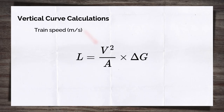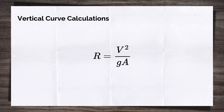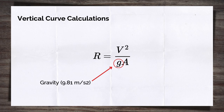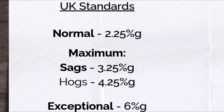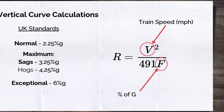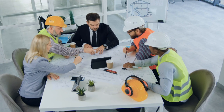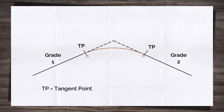Curve length can be determined using the train speed V, an acceptable rate of acceleration A (which you'll normally find in your standards), and the change between the gradients in decimal form, G. When it comes to radius, the minimum curve radius is found with: R = V² / (g × A), with little g being gravity at 9.81 metres per second squared. The curve length and radius are linked through: radius = length divided by the change in big G. In the UK, the standards set limits on the acceptable value of vertical acceleration as a percentage of little g. A further formula links train speed and vertical curve radius, using miles per hour for speed and F as the percentage of little g. Tangent points are the locations where vertical curves meet the constant gradient. The intersection point is where the two constant gradients would meet if no vertical curve were applied between them.